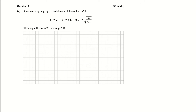A sequence u1, u2, u3 is defined as follows. We need to write u3 in the form 2 to the power of p, where p is an element of the real numbers. Another way of writing u3 is u(2+1), because the question tells us any term is found by going u(n+1), so to get to 3 I go 2 plus 1.